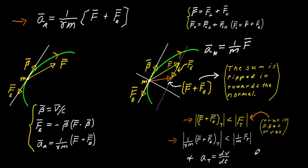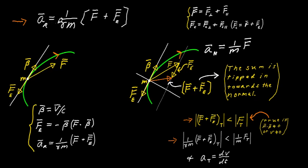A consequence of special relativity is that you cannot accelerate a particle to the speed of light. Going from the classical to the relativistic equation, you gain two extra inertial terms. These prevent the mass from being accelerated to c: as v approaches c, the gamma factor goes to infinity, so the relativistic acceleration a approaches zero.